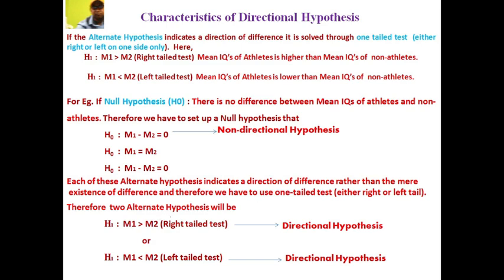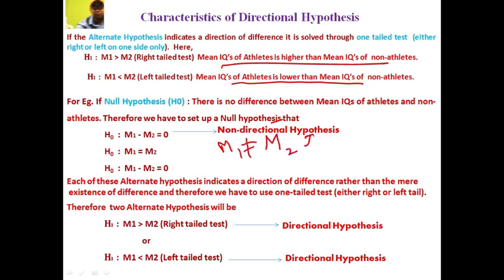For example, in the case of a right-tailed test, the mean IQ of athletes is greater than the mean IQ of non-athletes. Whereas in a left-tailed t-test, the mean IQ of athletes is lower than that of non-athletes. If the null hypothesis states no difference between mean IQs, there are three possibilities: M1 is not equal to M2 (non-directional), M1 is less than M2 (left-tailed), or M1 is greater than M2 (right-tailed).